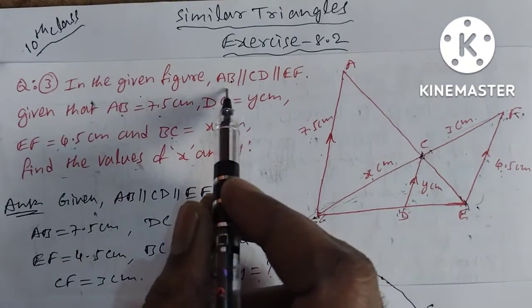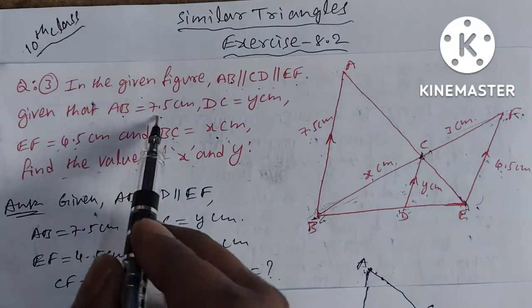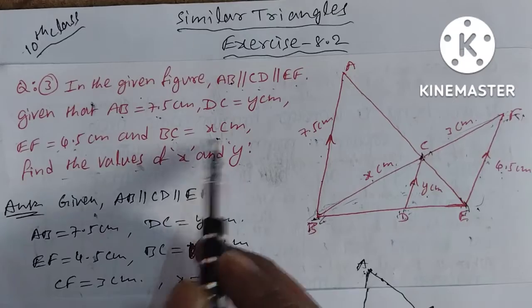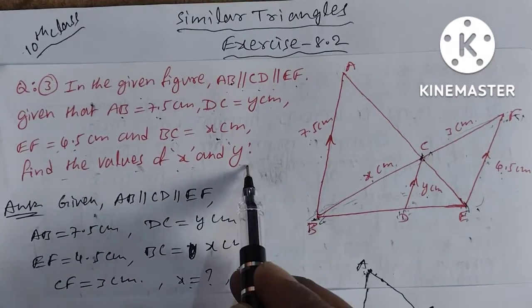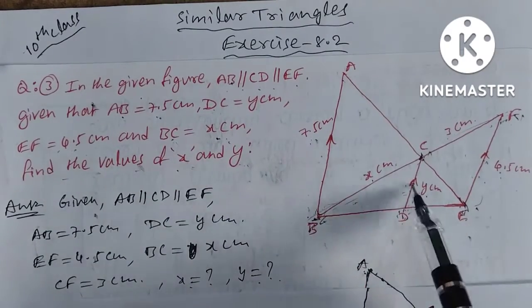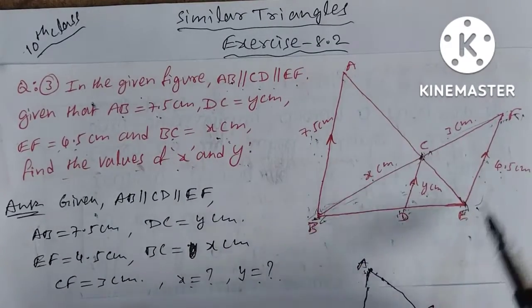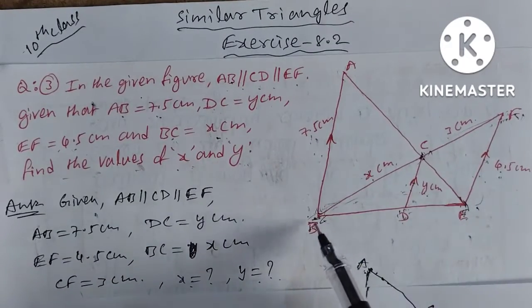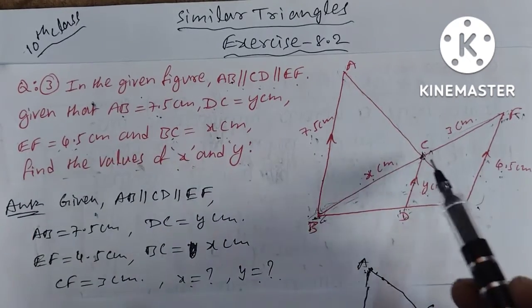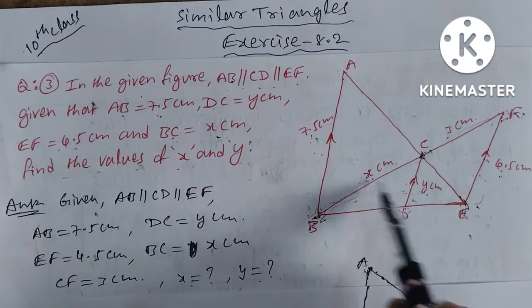In the given figure, AB is parallel to CD is parallel to EF. Given that AB is equal to 7.5, DC is equal to Y centimeters, EF is equal to 4.5 and BC is equal to X centimeters. Find the values of X and Y. We have 3 parallel lines: AB, CD, EF. Also, CF is equal to 3 centimeters. So, we have to find X and Y values.